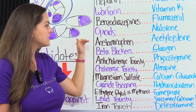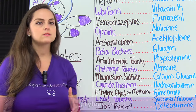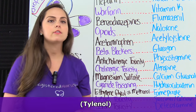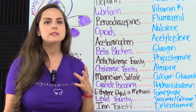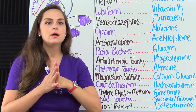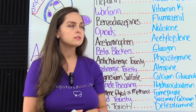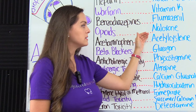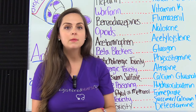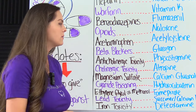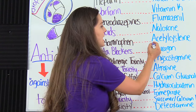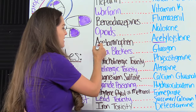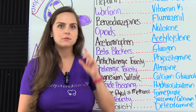Then we have acetaminophen — here in the U.S. that is Tylenol, a painkiller you can take over the counter. If a patient takes too much of this — say they're trying to commit suicide or overdose — we can give them what's called acetylcysteine. How I remember this antidote is that acetylcysteine has 'ACE' in it, and so does acetaminophen. So those two go together.